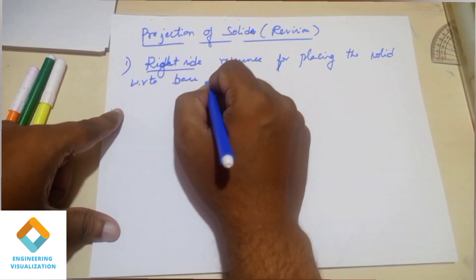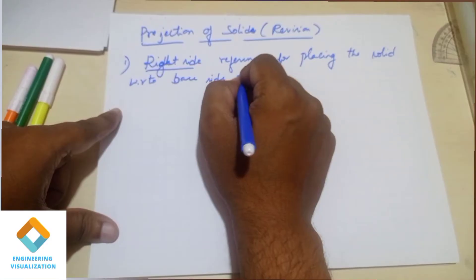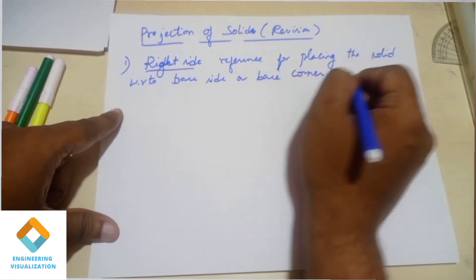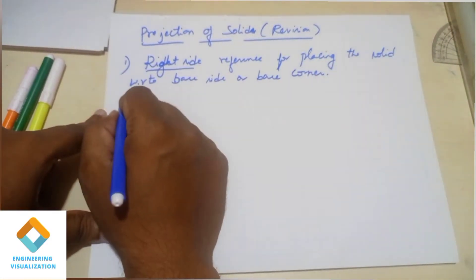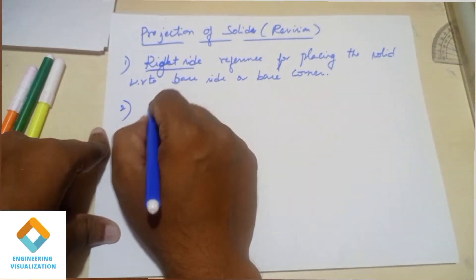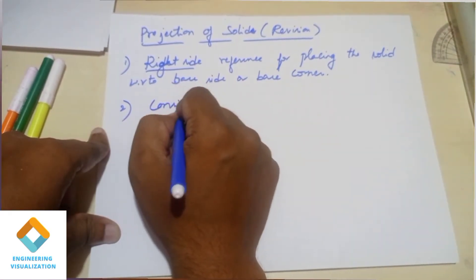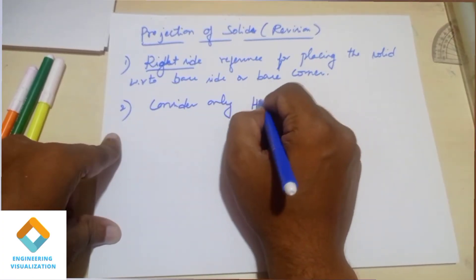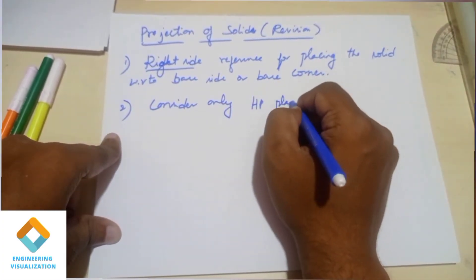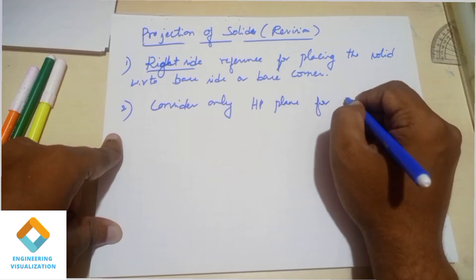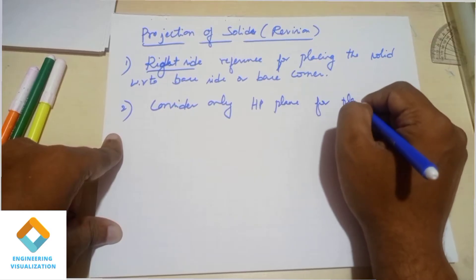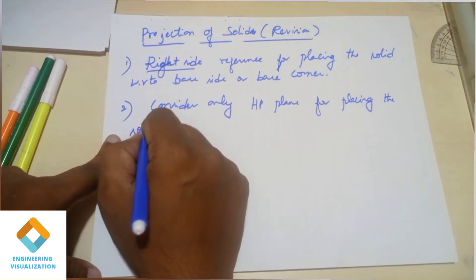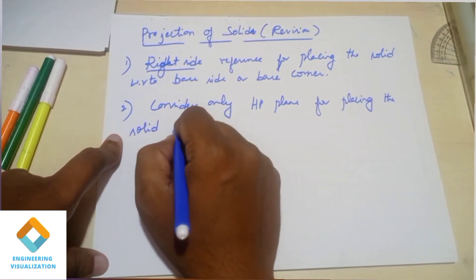This edge corner is the base edge corner. This is the right side reference. It is exactly opposite of the projection of planes. There is confusion. The first position is the right-hand side reference. The second concept is the right-hand side reference — we have to place the lamina only with respect to the HP plane.